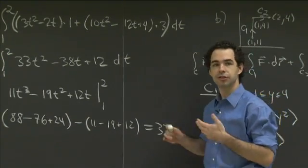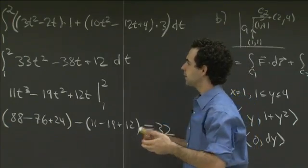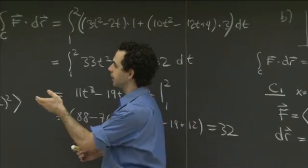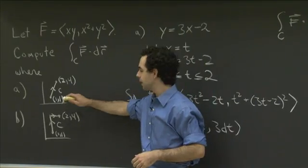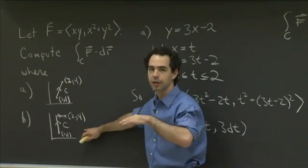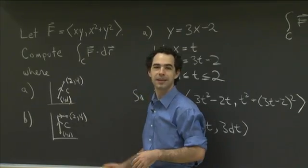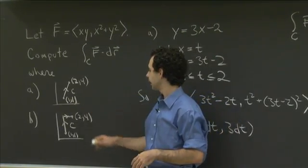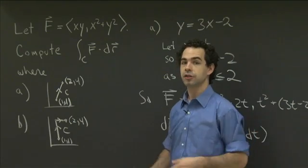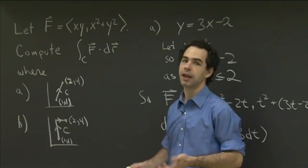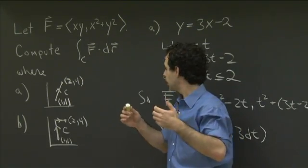The other thing to take away is the general approach: whenever you have a problem like this, take your curve and break it into nice pieces, then parametrize each piece. In part A we had a single slanted line; in part B, a piecewise path with vertical and horizontal segments. Sometimes you need only one piece; if a curve has corners, you might want more pieces. Choose a nice parametrization, and that reduces your problem to single-variable integrals just like in Calculus 1.